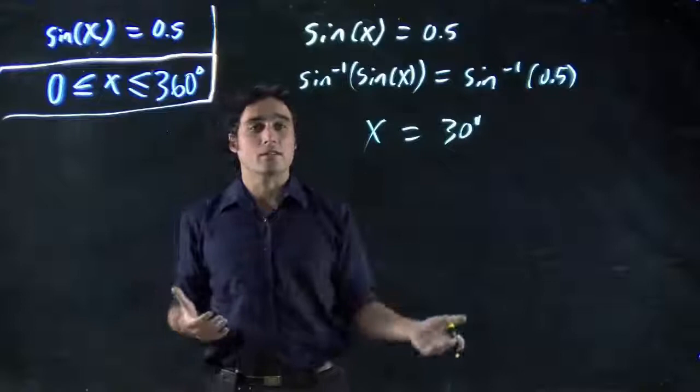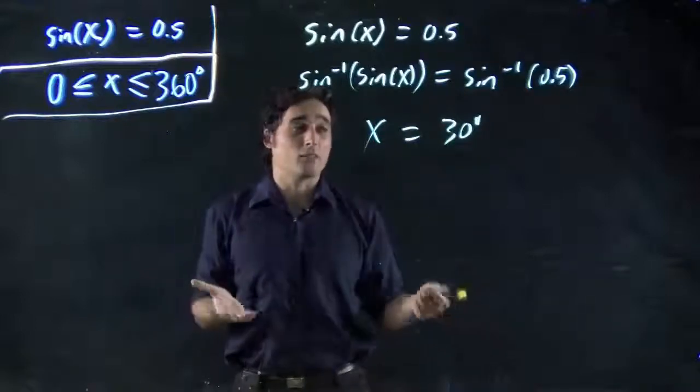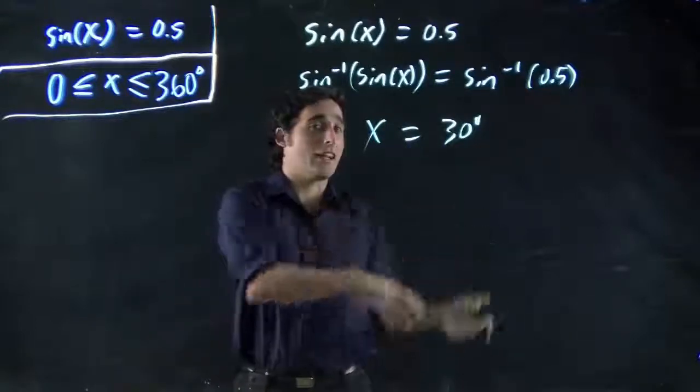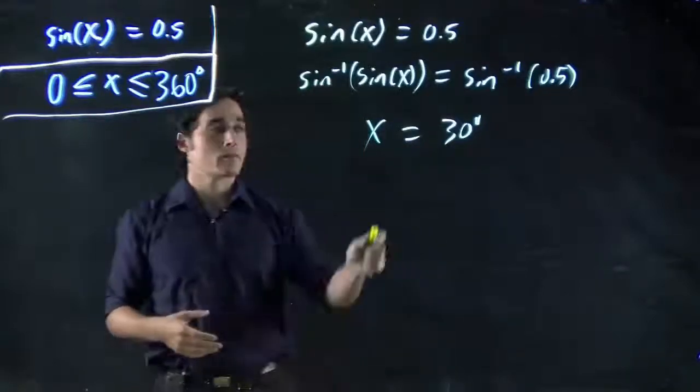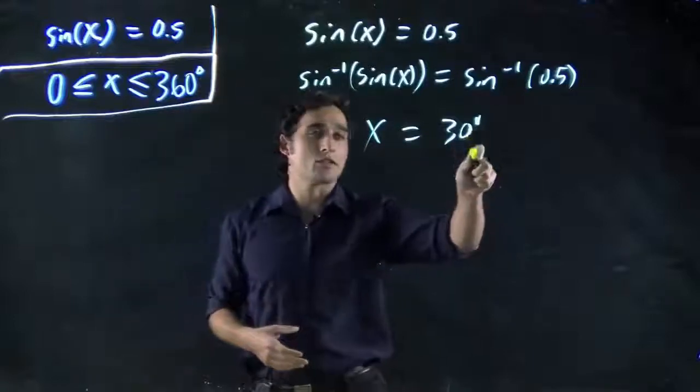Either way, it doesn't matter. Remember, we've already looked at how to convert between them anyway. So we could get in degrees and then get our answer in radians just by converting or vice versa. In this case, we're choosing degrees. So we've got x equals 30 degrees.